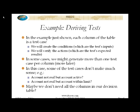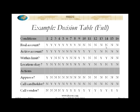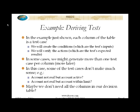Looking at this table, we have some nonsensical columns — for example, account not real but account active. How exactly would that exist? If the account is not real, how could it be active? We have a number of these kinds of combinations which are nonsensical. How could it be not real, active, and within limit — or for that matter out of limit? What would it mean if the account doesn't exist? Does it have a limit? And how could the location be okay if it's not a real account?